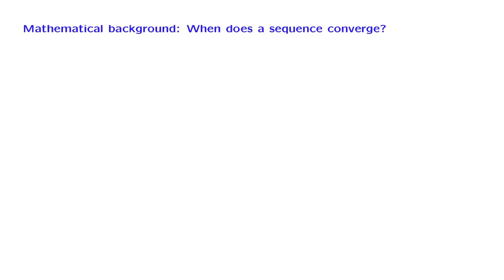So we looked at the formal definition of what it means for a sequence to converge. But as a practical matter, how can we tell whether a given sequence converges or not? There are two criteria that are the most commonly used for that purpose, and it's useful to be aware of them.